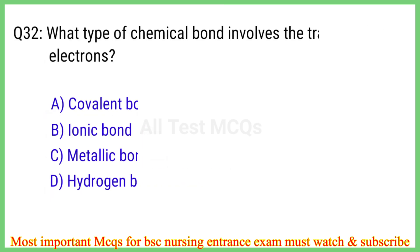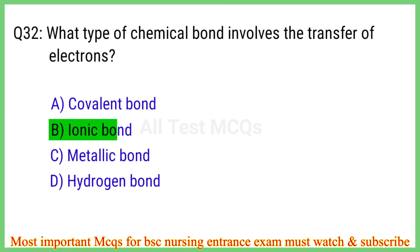Q32. What type of chemical bond involves the transfer of electrons? The right answer is option B: Ionic bond.